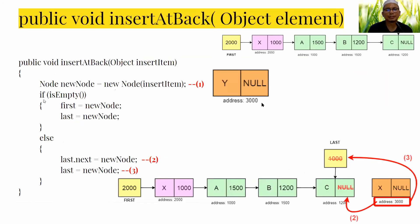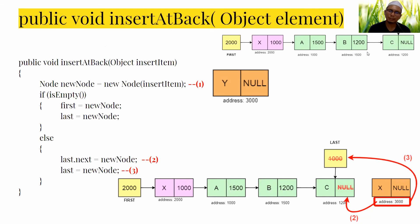Next is the insertAtBack method. This is a void method that receives one parameter. From the name, we know the new node will be inserted at the end of the list. Currently after insertAtFront, we have a list with four nodes: X, A, B, C.